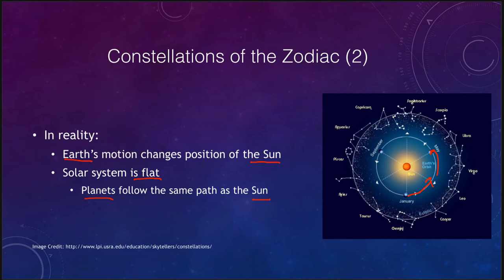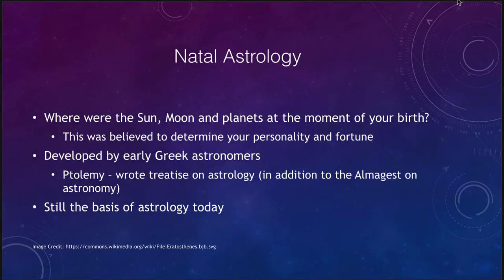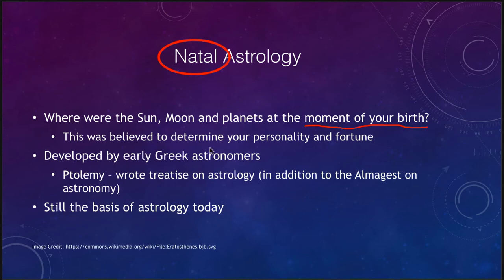Let's look a little more at what this means for astrology. We look at natal astrology, one of the early astrologies, which asked: where were these objects at the moment of your birth? Not just where was the sun — your solar sign — but where was the moon, and where were the five planets at that time? That was said to determine what your personality would be and what your life would be like.